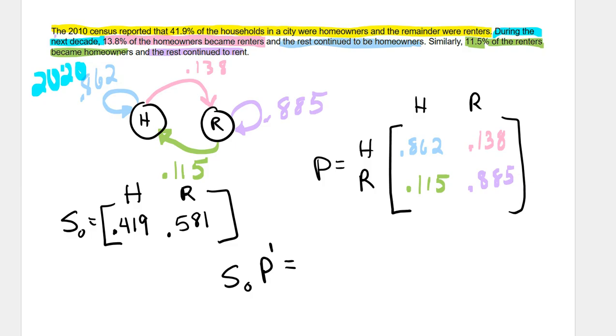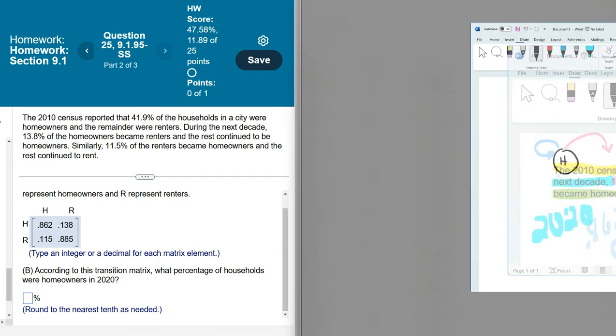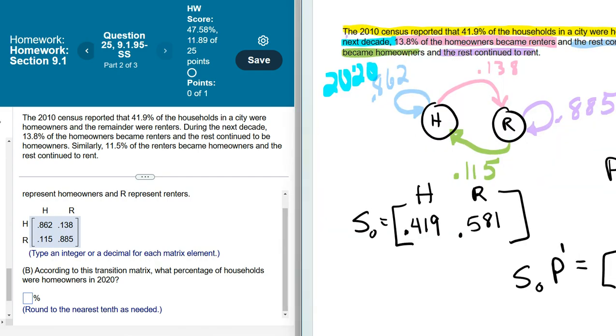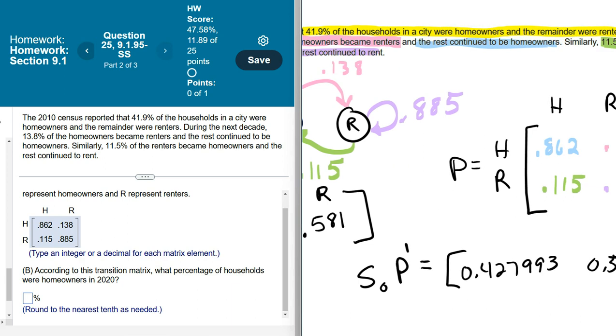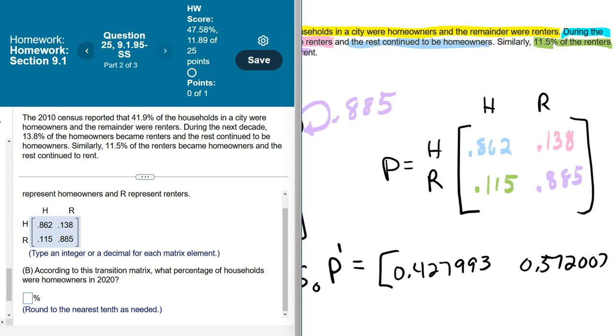When I did this, I ended up getting 0.427993, and 0.572007. My MyMathLab says, round to the nearest tenth as needed.